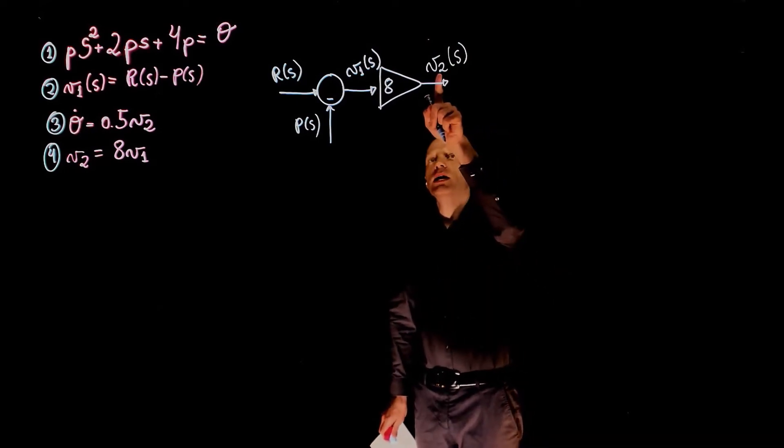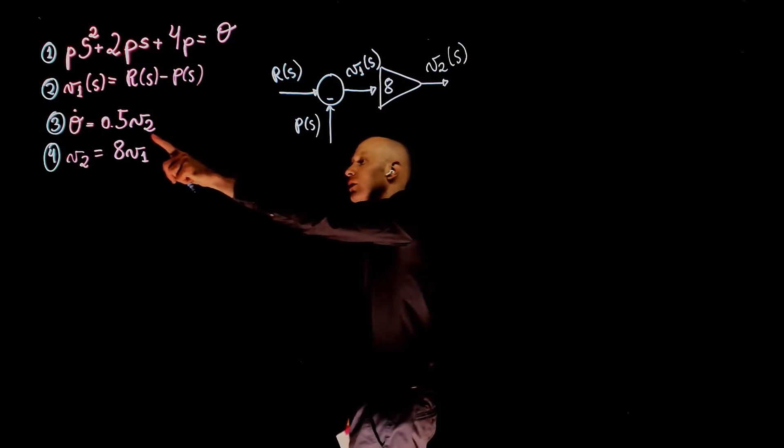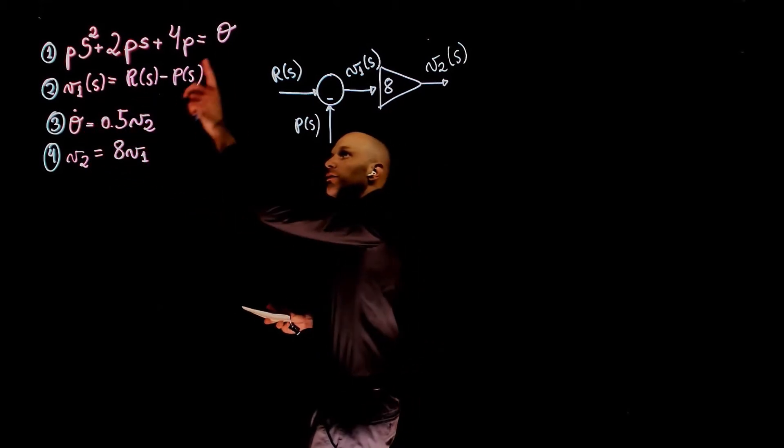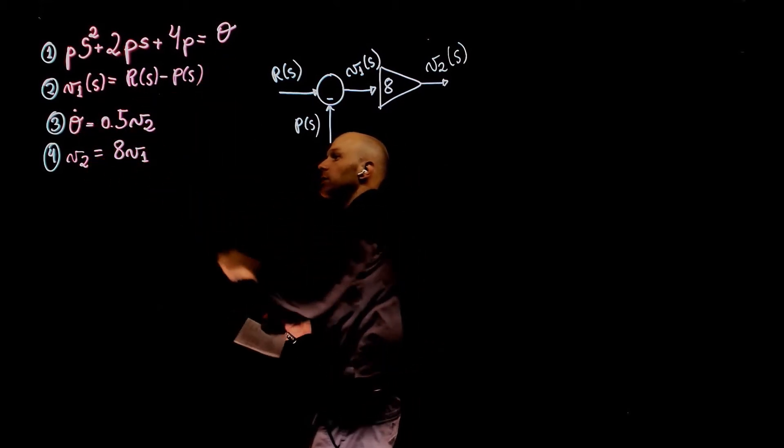Following the same process, now v2 shows up in equation 3. Theta dot, if this is the motor position, theta dot is the motor speed. So the motor speed is a function of the amplifier output.